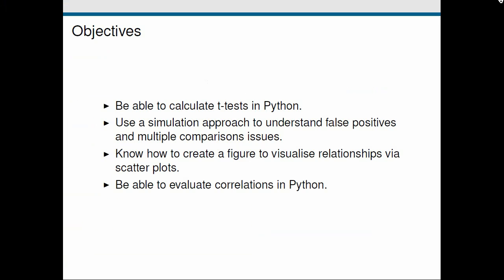Looking back on the objectives for this lesson: we learned how to calculate t-tests in Python, covering both independent samples and one-sample t-tests. We used a simulation approach to understand false positives and the multiple comparisons problem. We then looked at creating scatter plots to visualize relationships and evaluating Pearson's correlations in Python. See you in the next screencast.